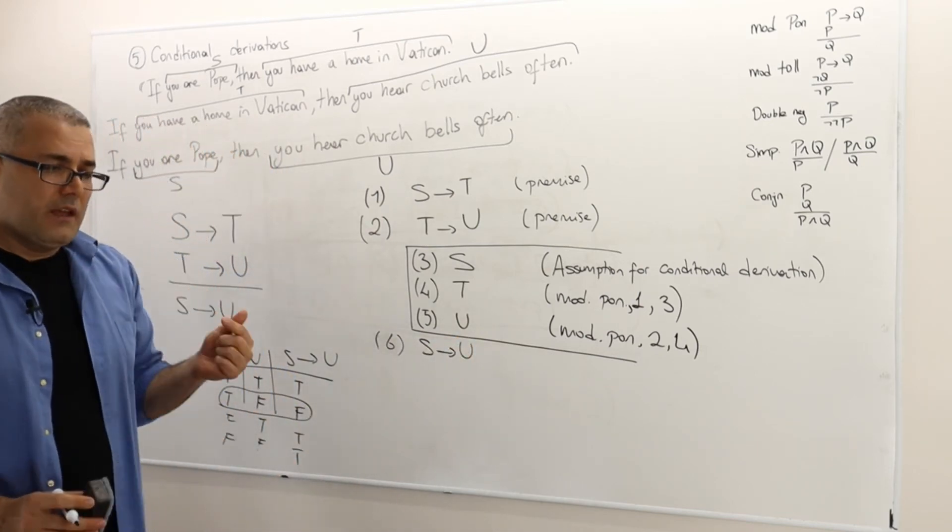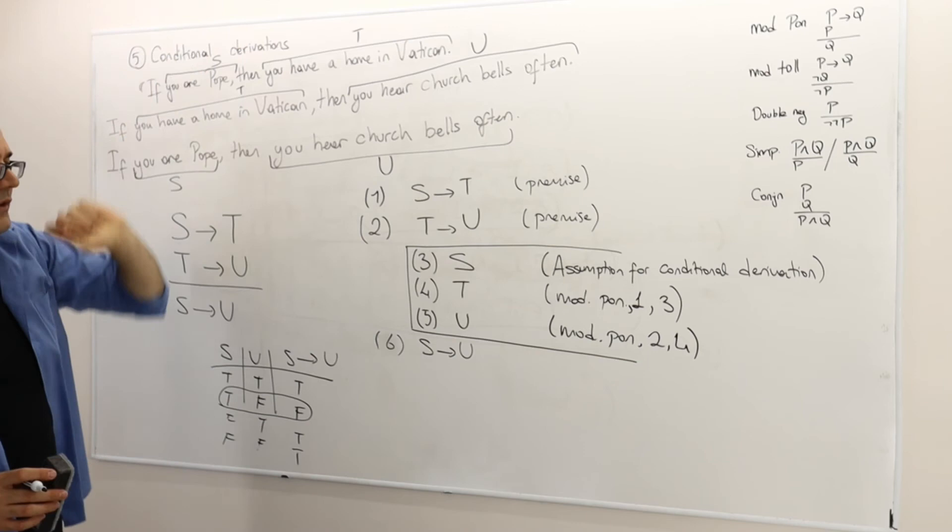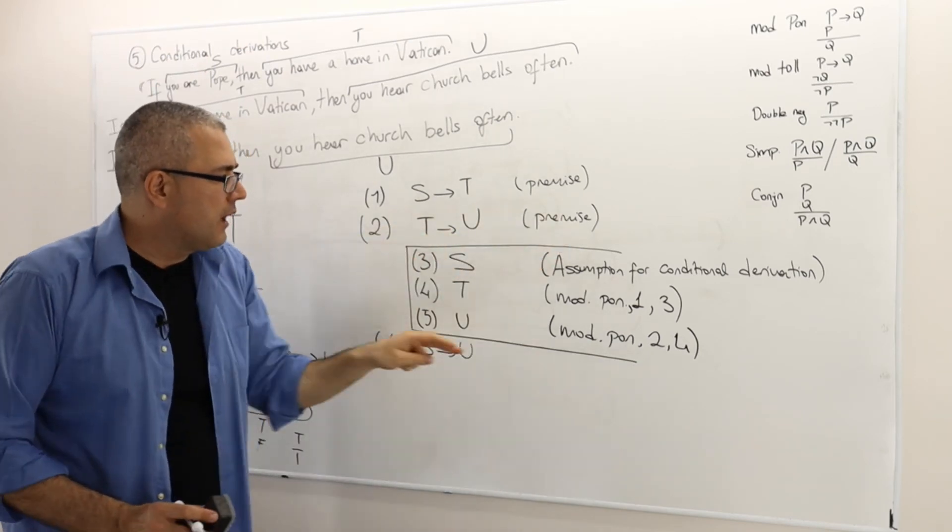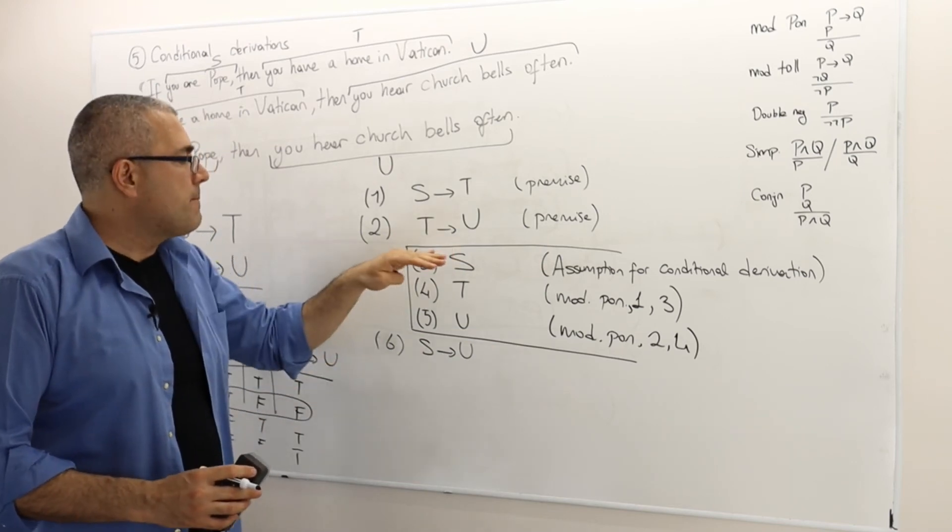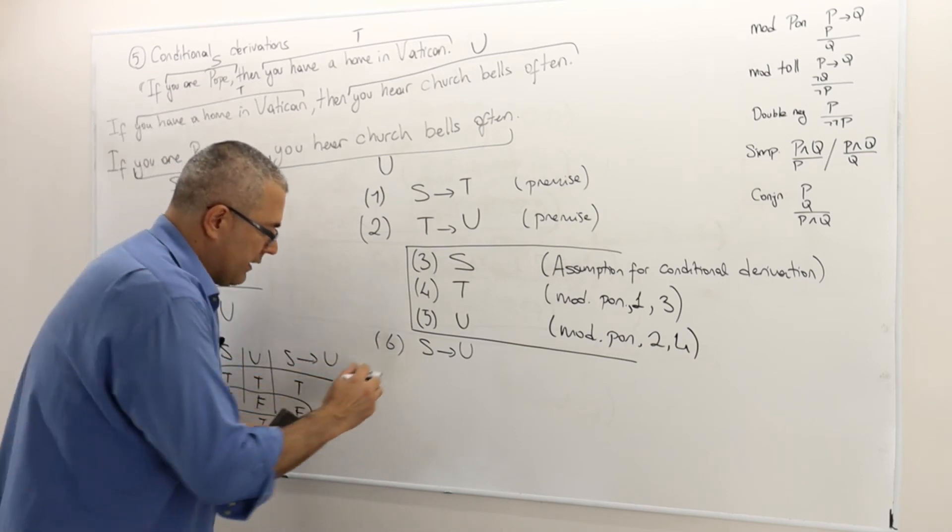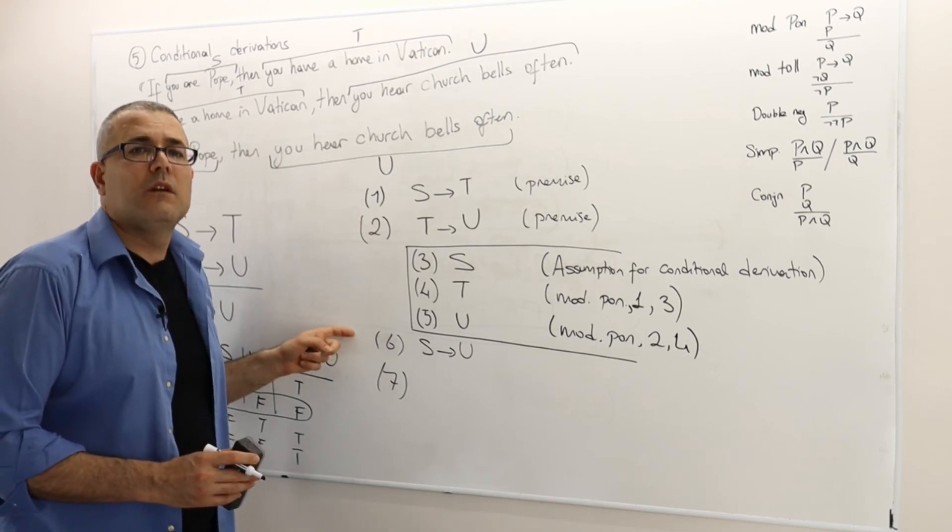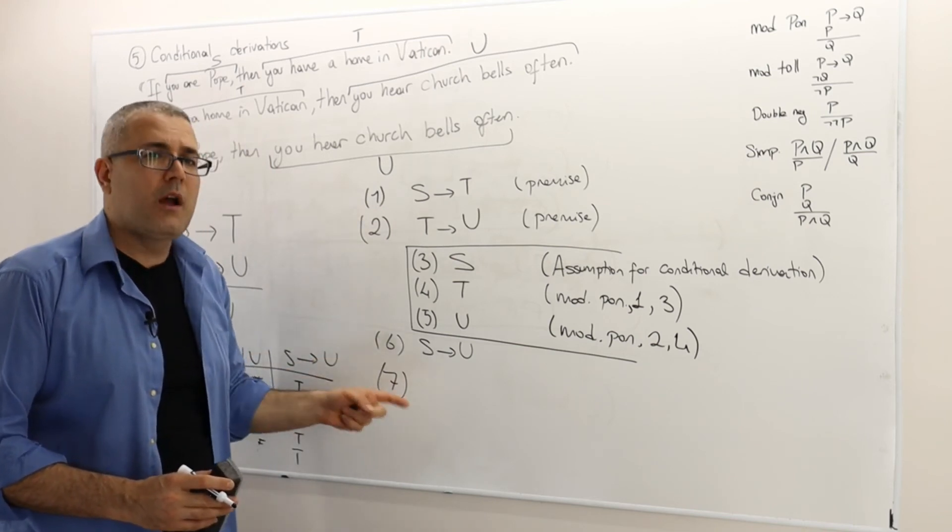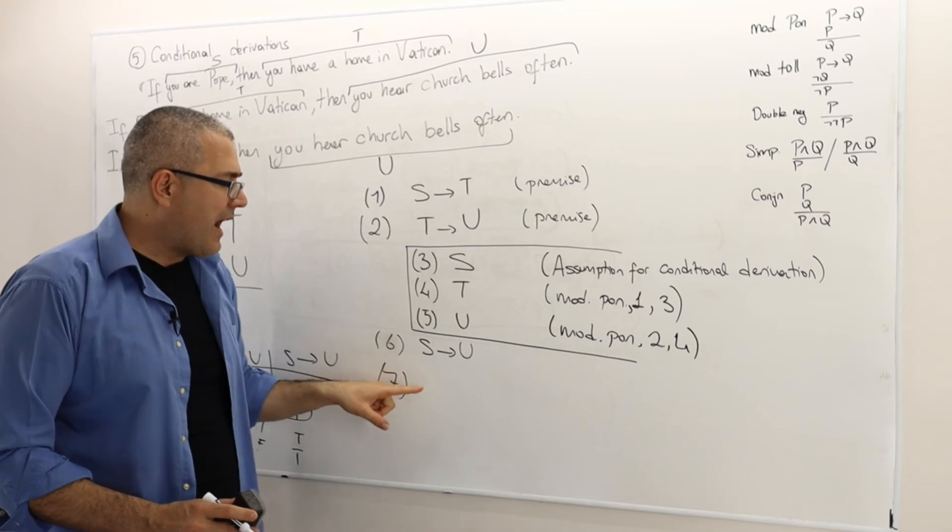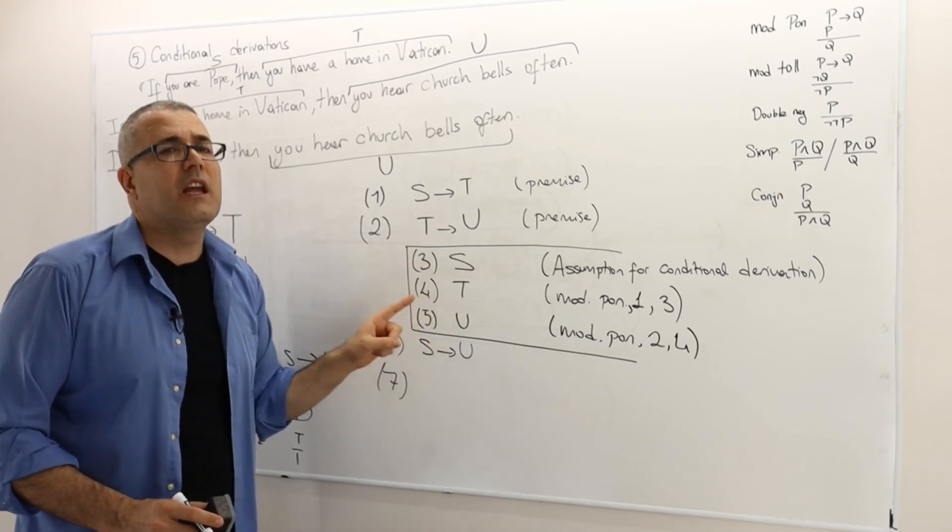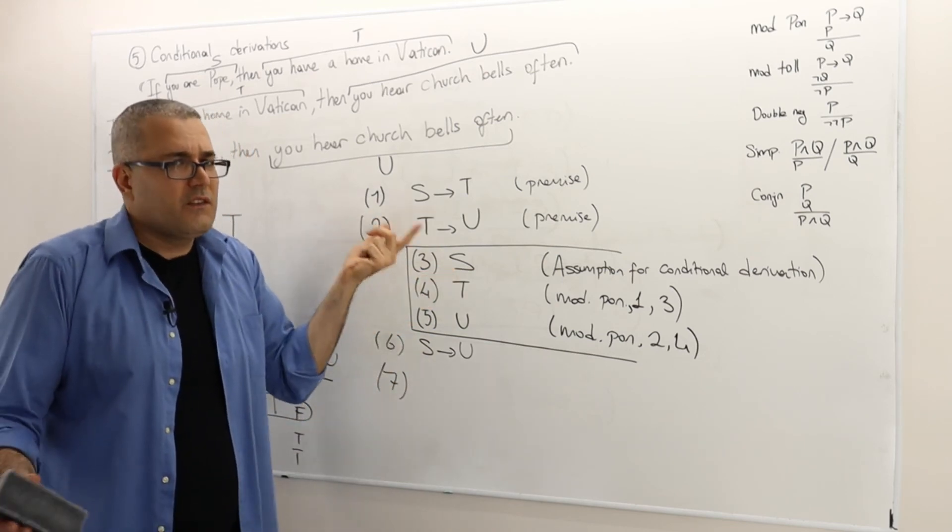So there's one thing which is very important for conditional derivations: I have this sort of a box which we call sub proof. Normally in any line, line seven, I can use all the previous lines again and again, meaning they must be true. But when I have a conditional derivation and a sub proof like this, I cannot refer back to those statements because those statements are not necessarily true.